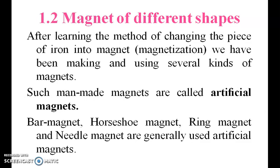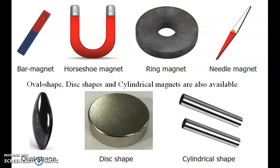Bar magnet, horseshoe magnet, ring magnet, and needle magnet are the generally used artificial magnets. These are the examples: bar magnet, horseshoe magnet, and needle magnet.